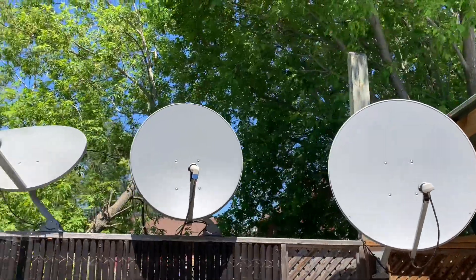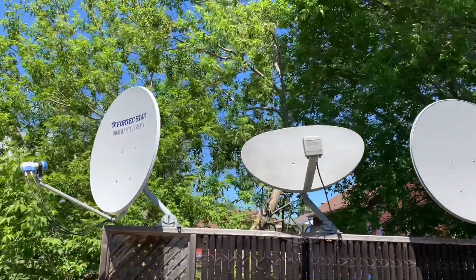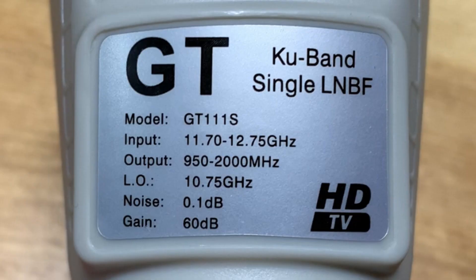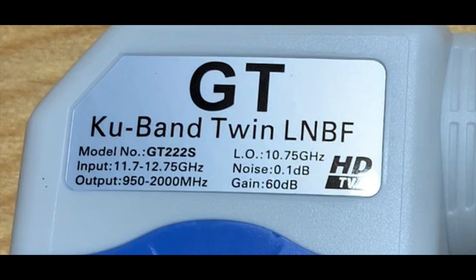Standard KU band LNBs use a local oscillating frequency of 10,750 megahertz. A local oscillating frequency is like a mixing frequency that the LNB uses to down-convert the high-frequency satellite signals to a bandwidth more suitable for traveling through coax cable. If you look on the label of your LNB, it will say 10,750 megahertz or 10.75 gigahertz — and that is the frequency you want to make sure you set in your receiver menu.